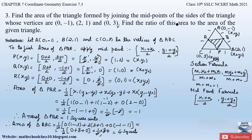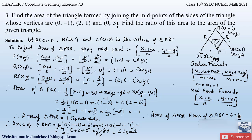Therefore the ratio of the area of triangle PQR to the area of triangle ABC is 1 : 4. So: area of triangle PQR : area of triangle ABC = 1 : 4. This is the result for question number 3.